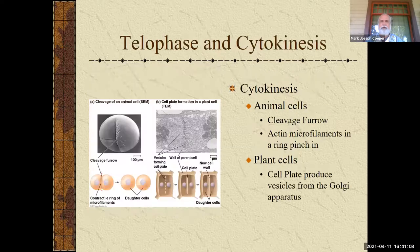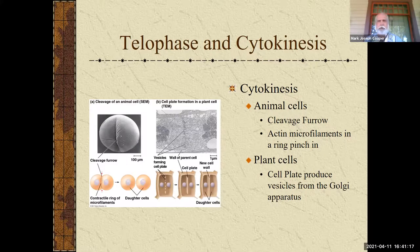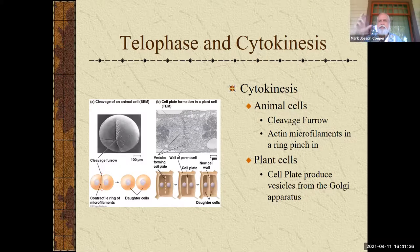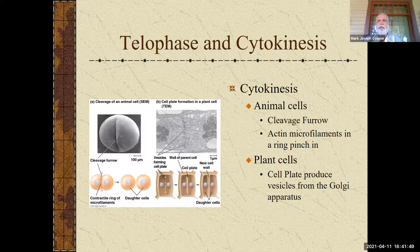While telophase is happening, you're also getting cytokinesis — the division of the cell itself. Animal cells and plant cells do it differently. Animal cells have a cleavage furrow: actin microfilaments form a ring that pinches the cell like a duffel bag with a drawstring, producing two genetically identical cells. In plant cells, you can't pinch because of the cell wall, so the Golgi apparatus produces vesicles that build a new cell wall called the cell plate between the two new cells.